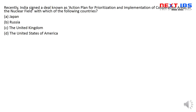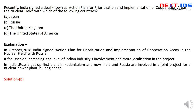अगला question: 2018 में एक deal हुई थी — action plan for prioritization and implementation of cooperation areas in the nuclear field — India की किस country के साथ? यह Russia के साथ हुई थी। Intelligent guess से भी पता चल जाता है — Russia के साथ India की nuclear partnership काफी ज़्यादा है। Kudankulam plant Russia के साथ है, VVER technology Russia दे रहा है। Bangladesh में भी jointly plant लगाने की बात है। Correct option is B.